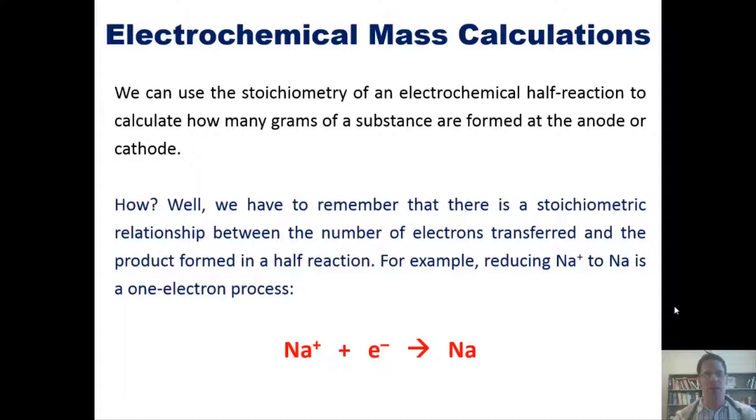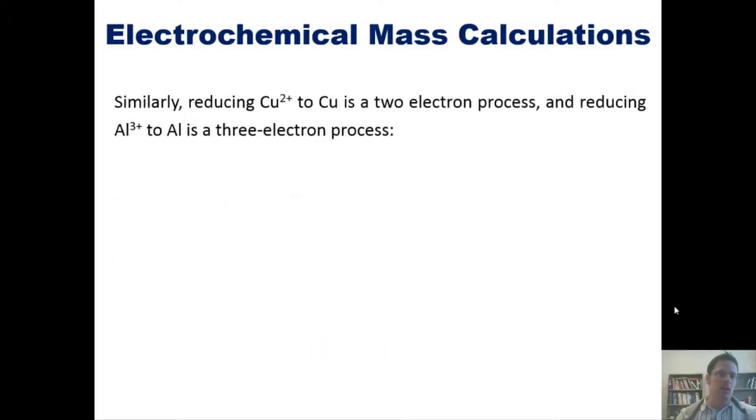For example, reducing Na+ to Na as shown here is a one electron process. Thus there is a one-to-one stoichiometric ratio between sodium cation here and electron. Similarly, reducing copper 2+ to copper zero is a two electron process as shown here, and reducing aluminum cation to aluminum zero is a three electron process. So once again there is a stoichiometric relationship between each of these ions and the number of electrons that they require to be reduced.